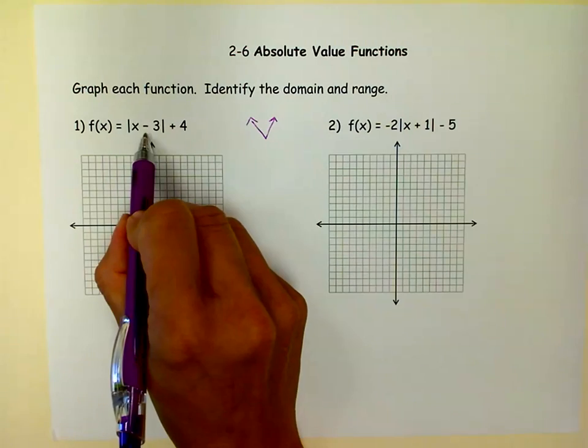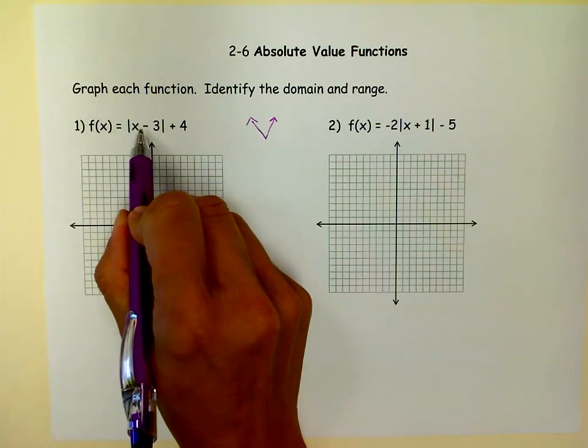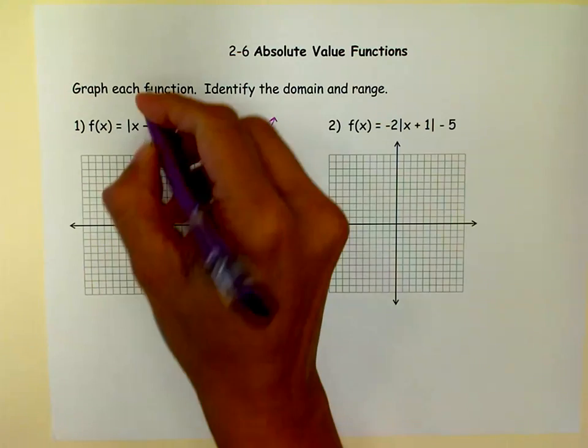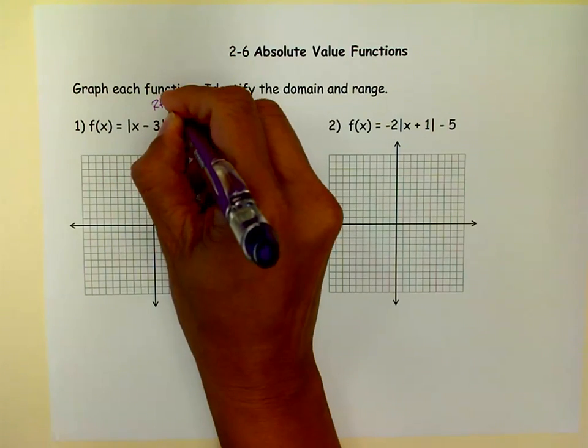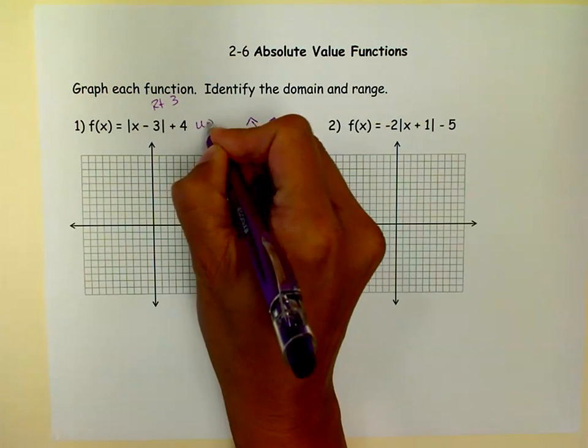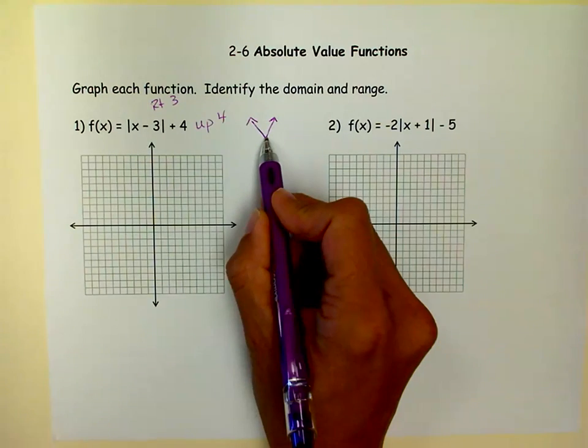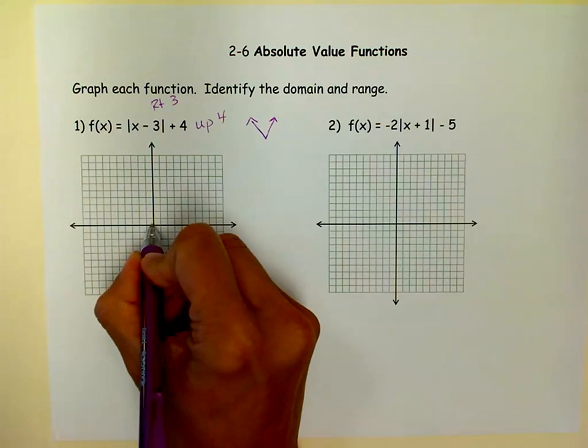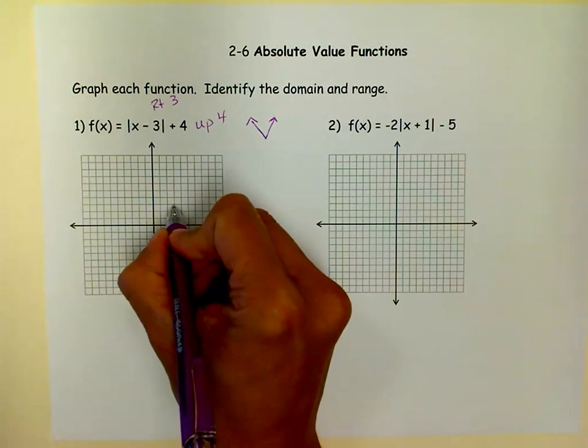I know that if there's a minus 3 in here, that I've moved the original graph right 3, right 3, and this moves it up 4. So, I actually know my little vertex here, instead of being at 0, 0, is right 3, and up 4.